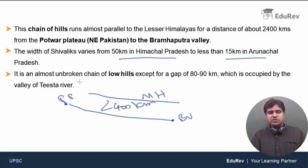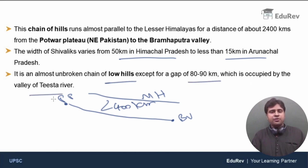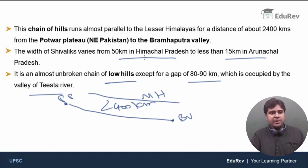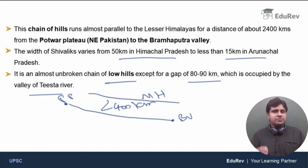Shivaliks form an almost unbroken chain of low hills, except for a gap of 80 to 90 kilometers which is occupied by the valley of the Tista River. There is a gap created by the Tista River, and this gap is 80 to 90 kilometers wide. In India, the Tista River flows through the states of Sikkim and West Bengal.